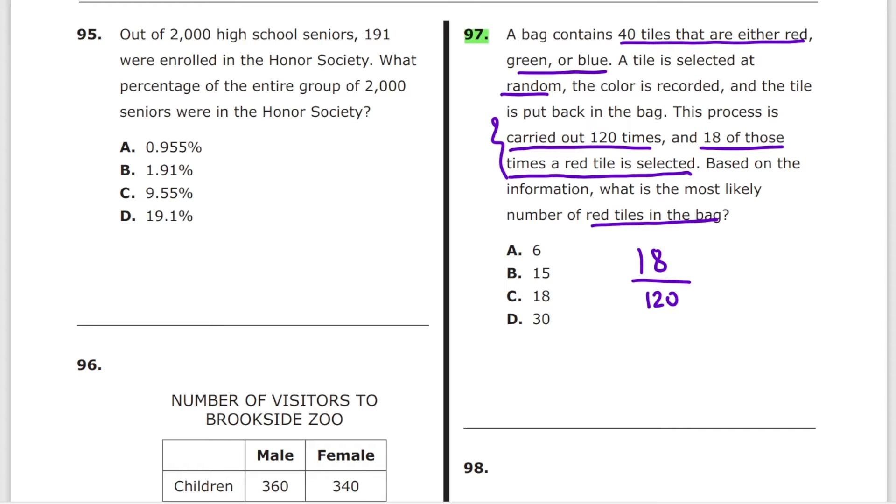Do not simplify anything yet. This is the probability of selecting a red tile because this is essentially how many red tiles are there versus how many total attempts. We're just using the formula. Now, we need to figure out what's the most likely number of red tiles in the bag. So with 40 tiles present, we need to multiply 40 by the probability of red, which is 18 divided by 120. The reason why I said not to simplify is because 40 is 40 over 1. You can cancel this and this. You get 1 here, you get 3 here. So it's 1 times 18 over 3. The answer is 6, option A.